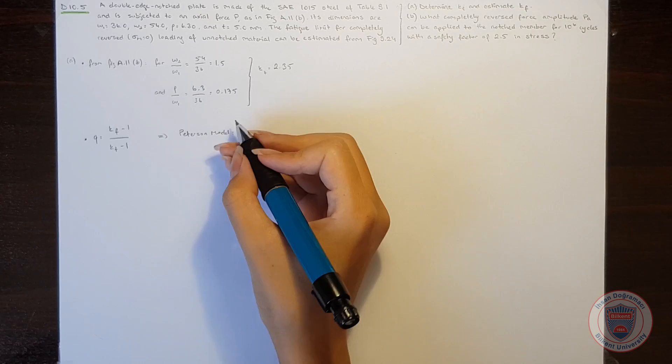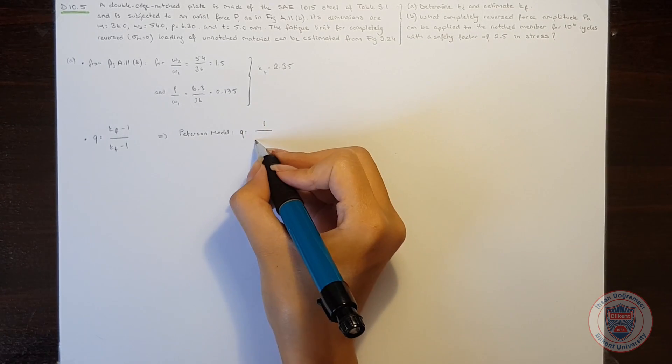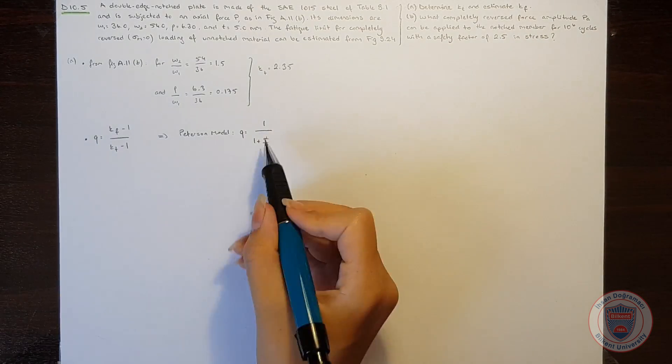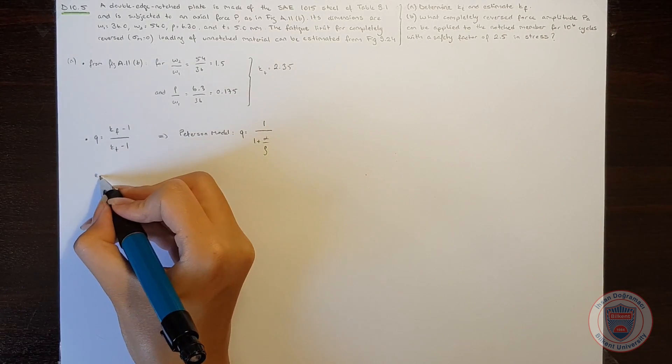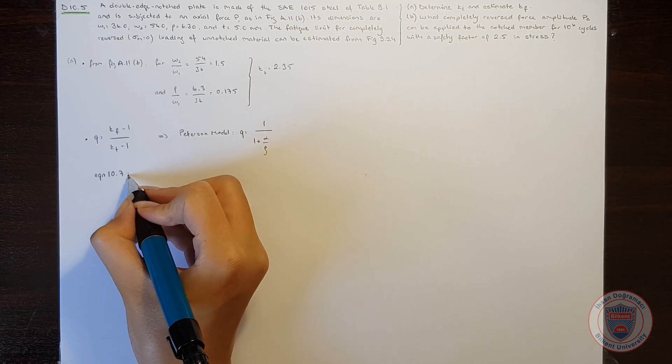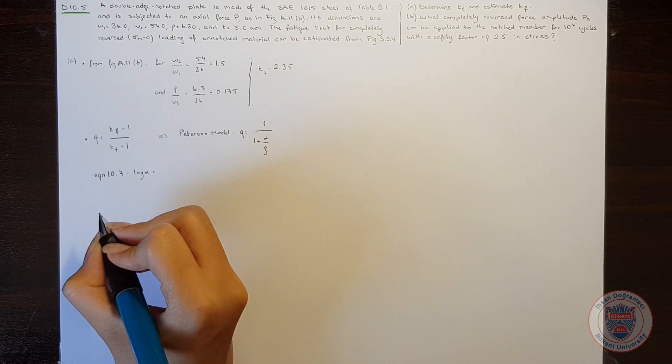According to the Petersen model, the notch sensitivity is equal to 1 over 1 plus alpha over the notch radius. To calculate alpha, we will need to use the equation 10.7. We know that the logarithm of alpha is equal to...